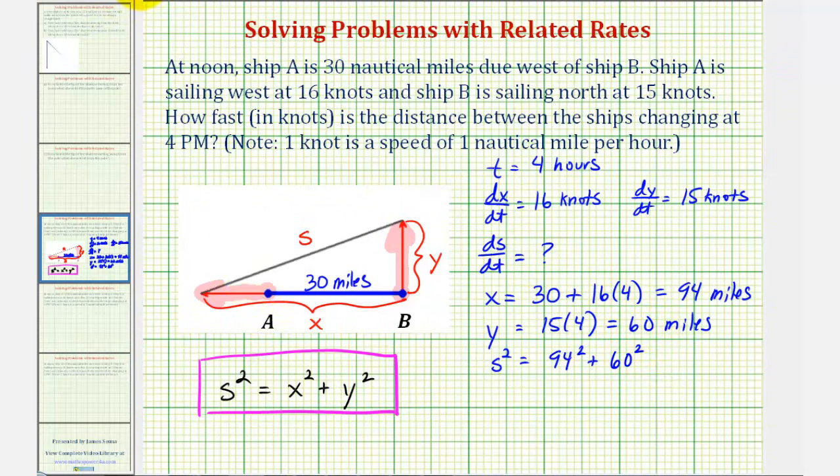So now if we take the square root of both sides of the equation, we would have S equals the square root of 94 squared plus 60 squared, which would be the square root of 12,436, which would be approximately 111.52 miles.